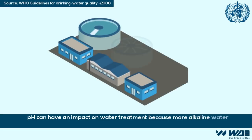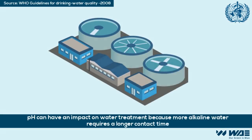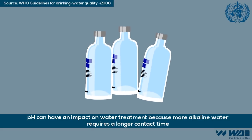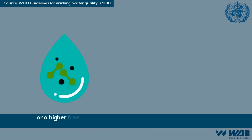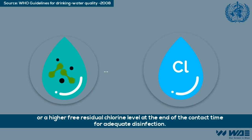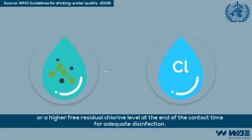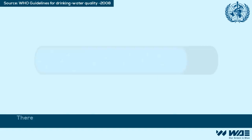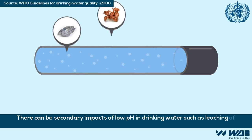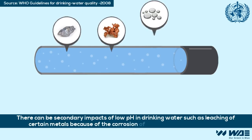More alkaline water requires a longer contact time or a higher free residual chlorine level at the end of the contact time for adequate disinfection. There can be secondary impacts of low pH in drinking water.